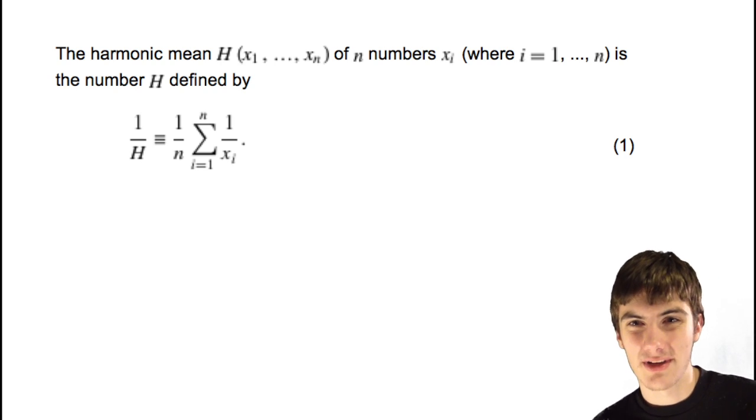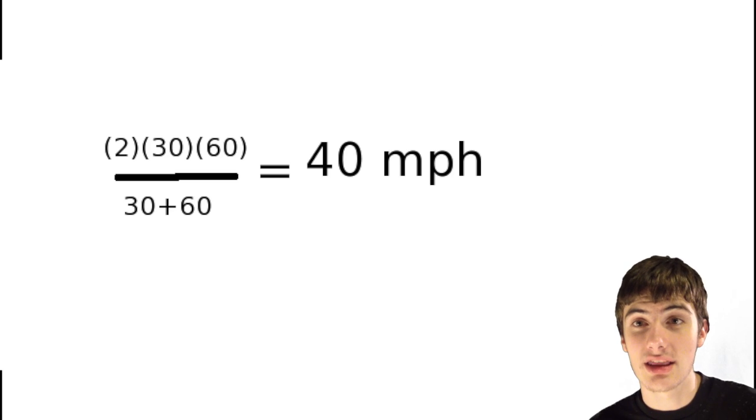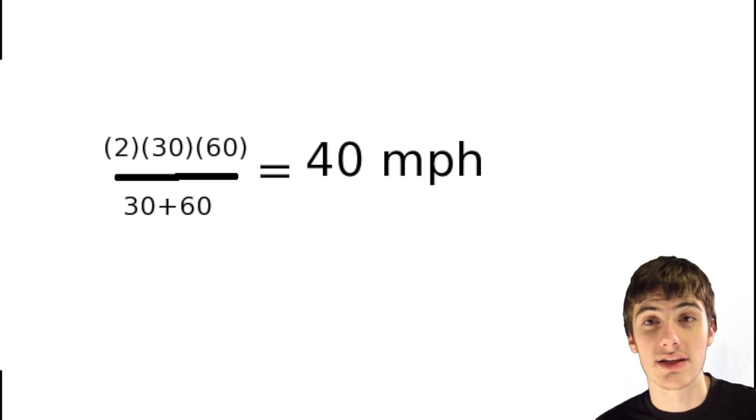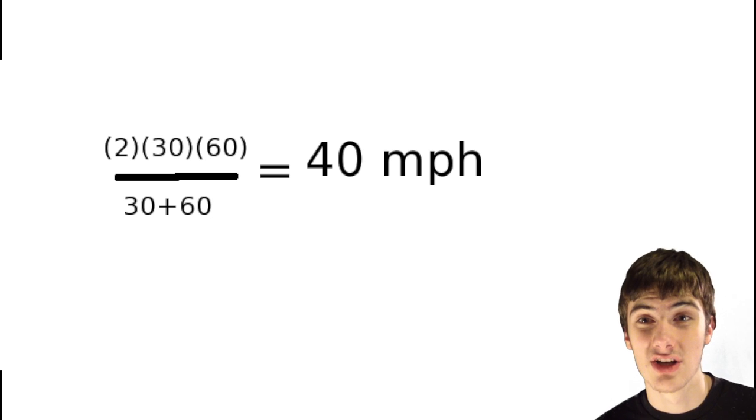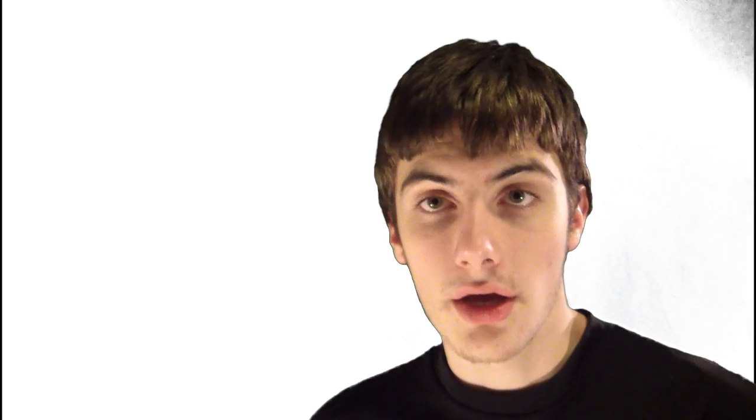Well, what you can do is take the harmonic mean of these two values, which is kind of complicated. I'll display it right there. But I'm going to simplify it for you. Basically, what you do is take the product of these two speeds over the sum of the speeds, and then you multiply by the number of times you travel that distance, which is two.